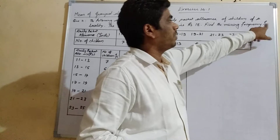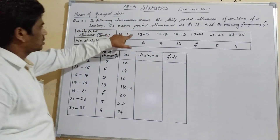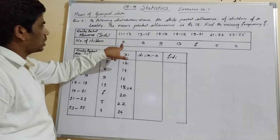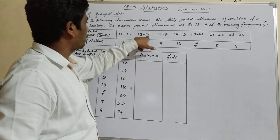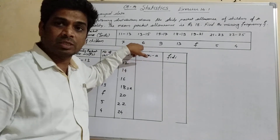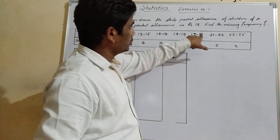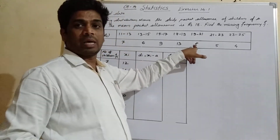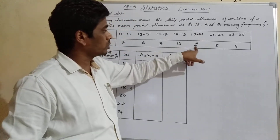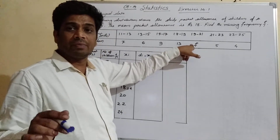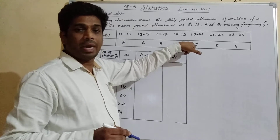Find the missing frequency F. It is given that for the 11 to 13 rupees range, 7 students are getting that allowance. For 13 to 15 rupees, 6 students. Similarly, for 19 to 21 rupees, the number of students is not given — that is the missing value we have to find.